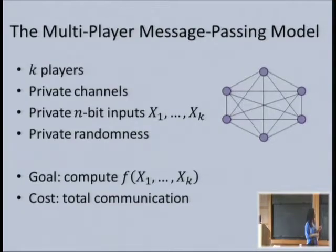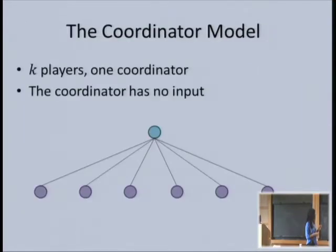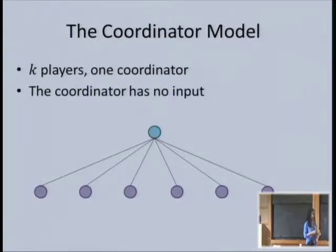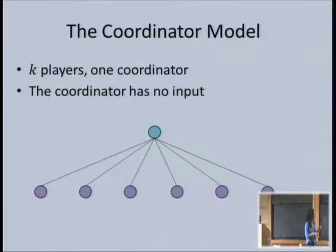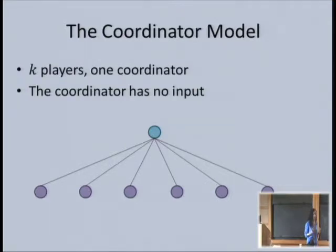For the purposes of the lower bound, it's actually better to think of the coordinator model, which is also known in the literature. We have one player who orchestrates everything. The players cannot talk directly to each other—they can only talk to the coordinator. The coordinator itself has no input, but it is the one that needs to know the answer at the end.